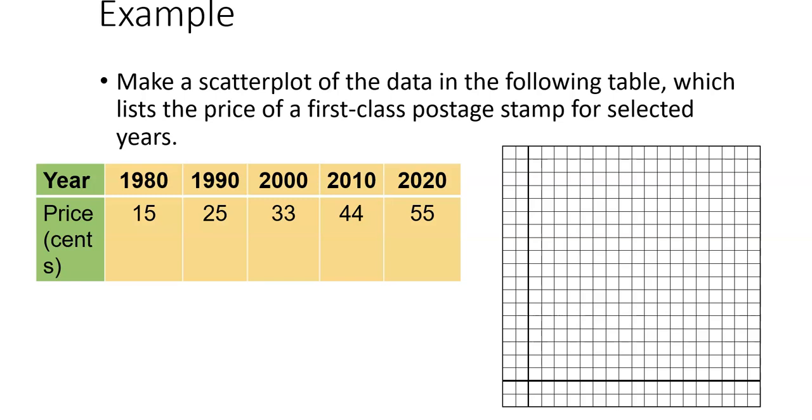This time, this goes the other direction. I have a table of values and I want you to make a scatter plot. This is a scatter plot of the data for cost of a first-class stamp going up from 1980 to 2020. Notice that the graph I gave you is only a first-quadrant graph. We don't need the entire graph. We only have positive prices and positive years.